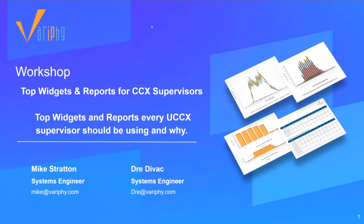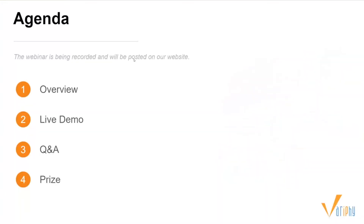For today we're going to be talking about our top widgets and reports for CCX supervisors. We'll start with a quick overview of our company, jump into a live demo where Mike will guide us through the top widgets and reports. We'll pause for Q&A, and after Q&A we will reward one lucky attendee with a $50 Amazon gift card, so hang around.